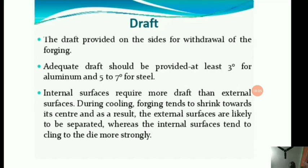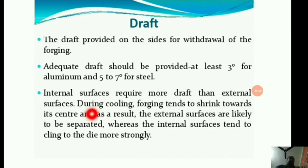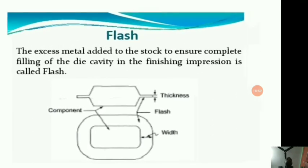Draft is an angular clearance provided on the sides for easy withdrawal of the forging. Adequate draft should be provided — at least 3 degrees for aluminium and 5 to 7 degrees for steel. Internal surfaces require more draft than external surfaces for easy removal. During cooling, forging tends to shrink towards its center; as a result, external surfaces are likely to be separated whereas internal surfaces tend to cling to the die more.